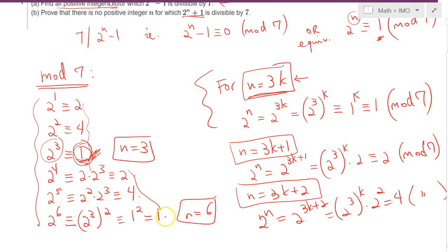Whenever we have multiples of 3, we get a 1, like n equals 3, like n equals 6, like n equals 9, and so on. Whenever we have a multiple of 3 plus 1 type of number, it will be congruent to 2. And all the numbers in the form 3k plus 2 will be congruent to 4, and this exhausts all the list of positive integers.